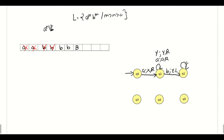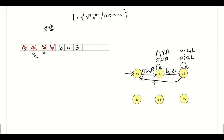While moving left, whenever the symbol a occurs, we will keep a as it is and move towards the left side. There is also a chance that we can see the symbol y while moving towards the left side; we will keep that y as it is and move towards the left side. At last, from state q2, we will see the symbol x, and we will keep x as it is, move towards the right side, and change state to q0.